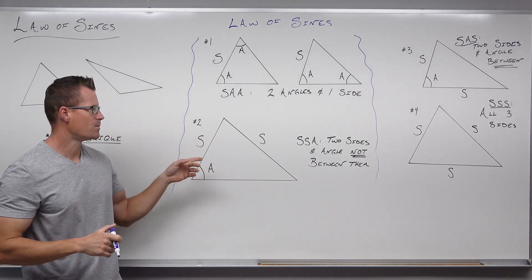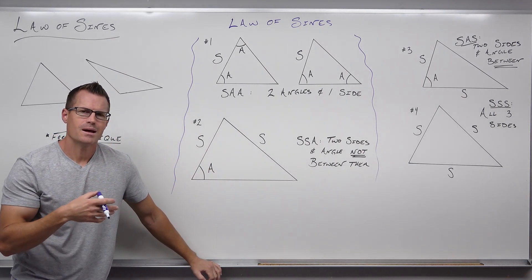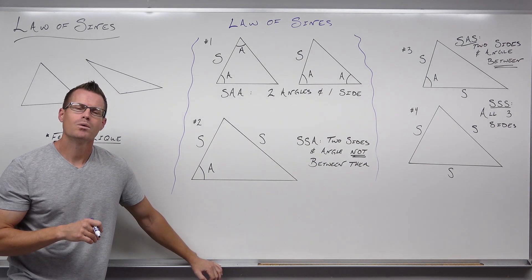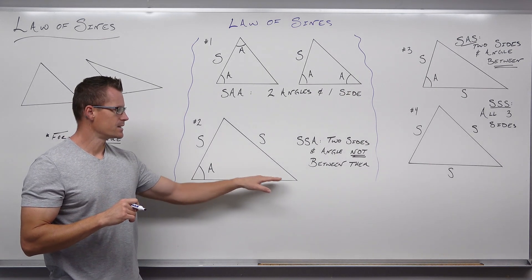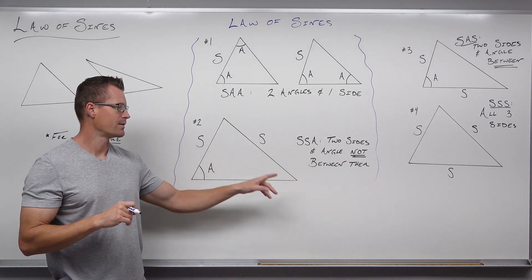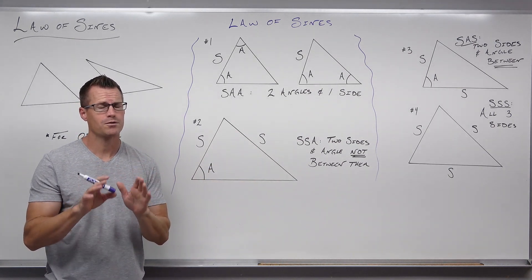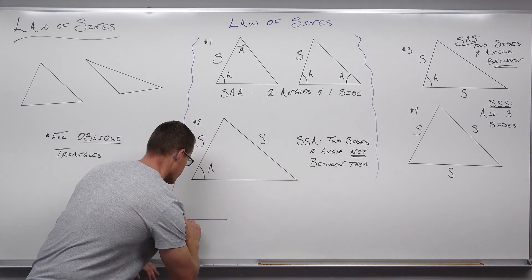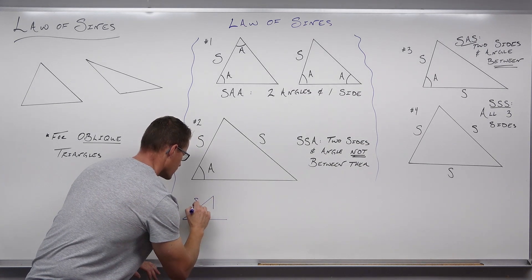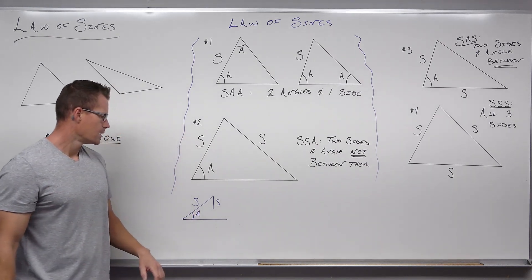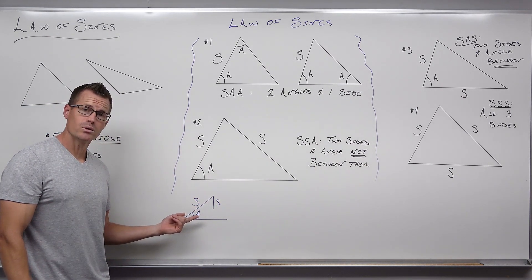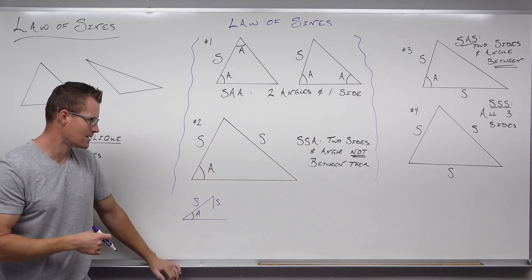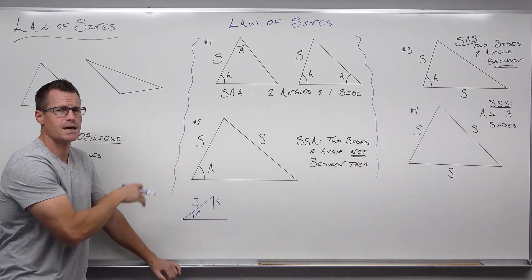I want to talk a bit more about this case — the side-side-angle case. This is what they call the ambiguous case, and the reason why is because this can give you one of four results. Think about it: if you do not know the third side, that side can be really short, really long, or not long enough to make a triangle at all. So there's one of four things that can happen. The first thing is you could actually get no solution — if you know a side, a side, and an angle not between them, you could end up with the case where it is too short to make a triangle. No matter what you do, it cannot make a triangle. So there would be no solution.